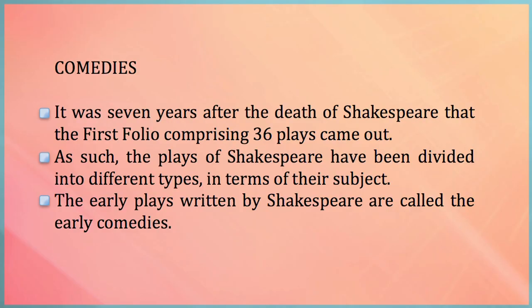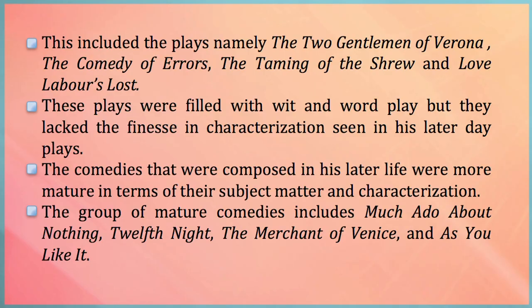Coming to the comedies: it was seven years after the death of Shakespeare that the first folio comprising 36 plays came out. The plays of Shakespeare have been divided into different types in terms of their subject. The early plays written by Shakespeare are called the early comedies. These included the plays, namely, The Two Gentlemen of Verona, The Comedy of Errors, The Taming of the Shrew, and Love's Labour's Lost. These plays were filled with wit and wordplay, but they lacked the finesse in characterisation seen in his later day plays.